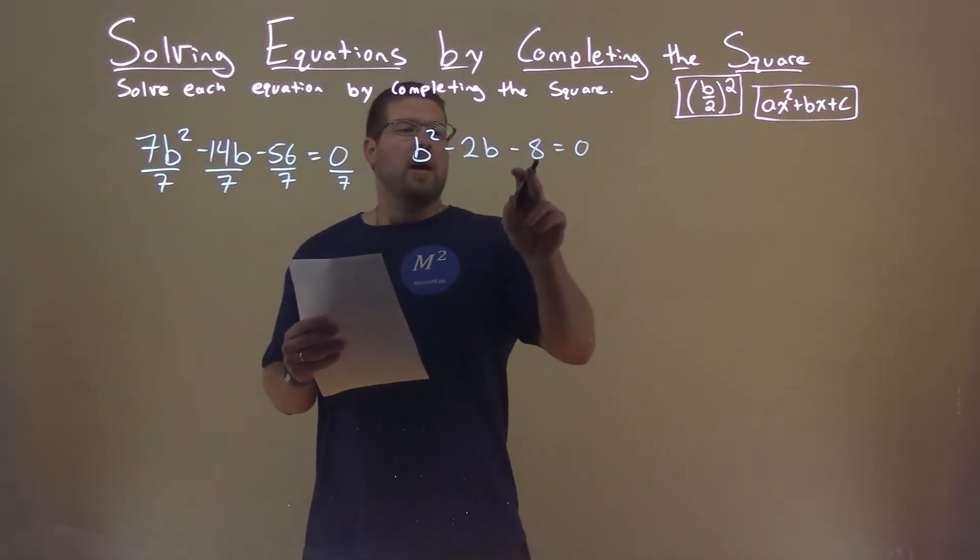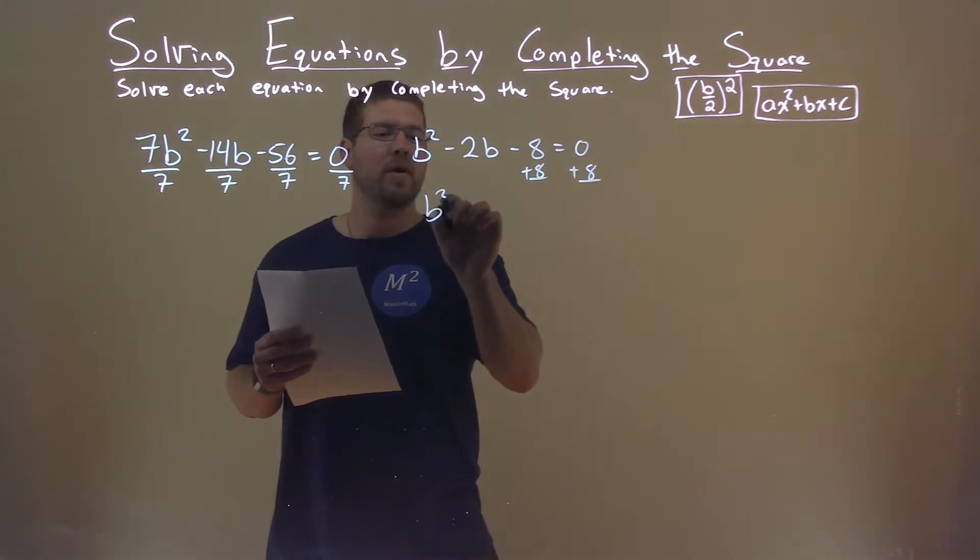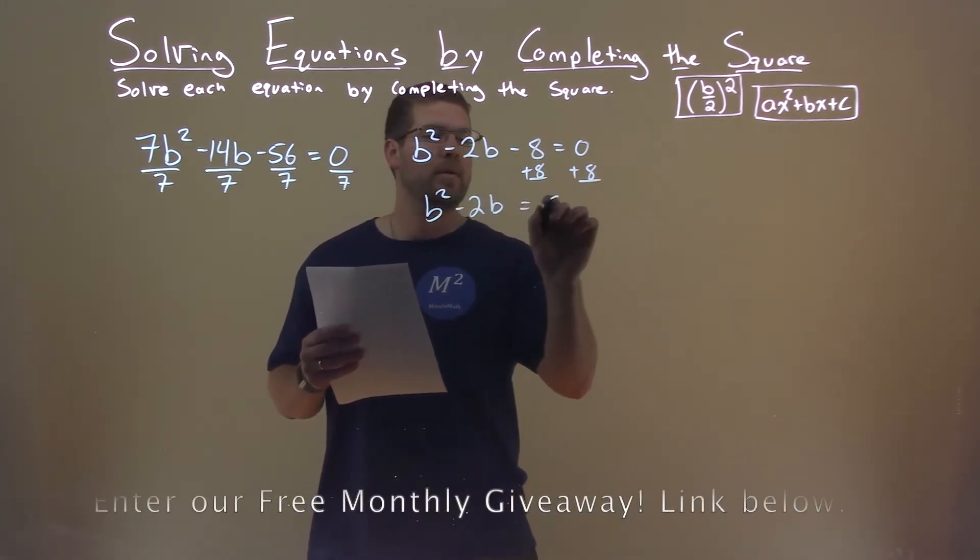Alright, I'm going to add 8 now to both sides, and we have b squared minus 2b equals a positive 8.